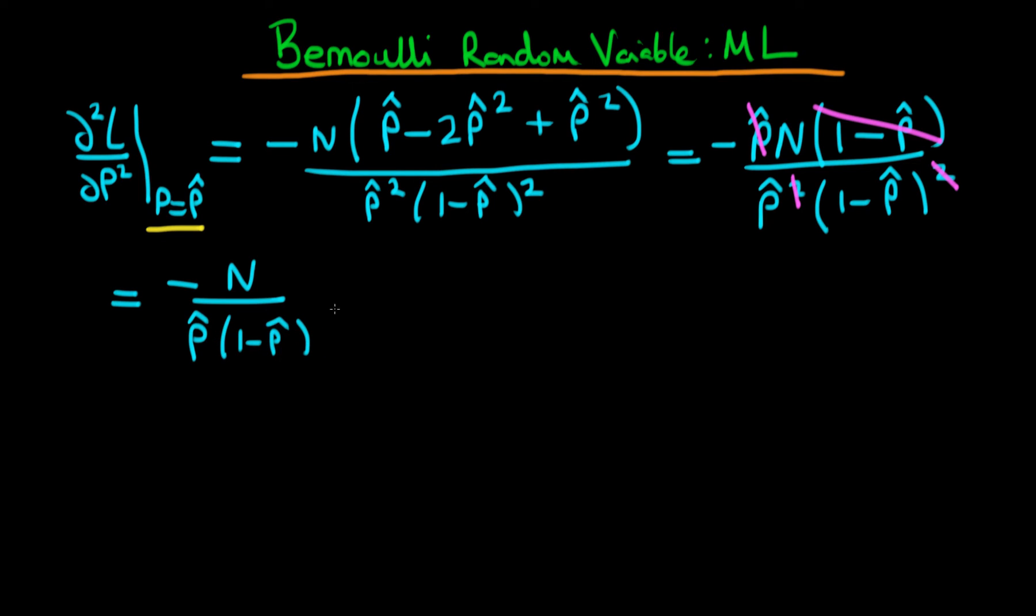Okay, so this is what we defined as the minus of the estimator of the information matrix, or in fact, it's not actually a matrix, it's just a scalar, so it's minus the estimator which we've got for the information matrix, which I'm going to write I-P-hat.